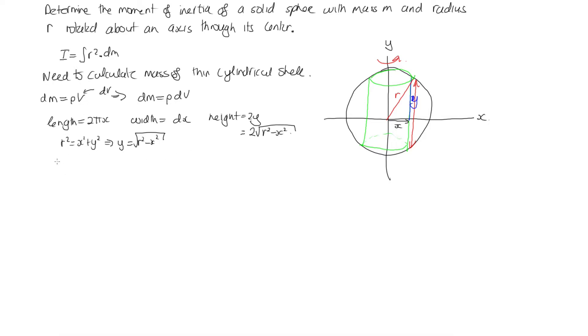Now what I'm trying to do is get the volume. So let's put that together. The volume of this very narrow cylindrical shell is given by 2πx times 2 times the square root of r² minus x² times dx. But what I'm really trying to get is this dm, because then I can substitute it into this moment of inertia equation. So in order to do that, I'm going to need to know the density.